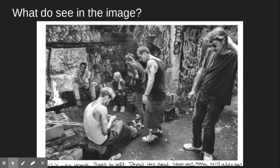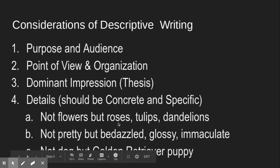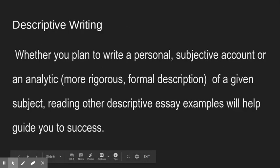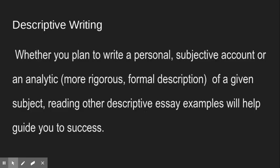For instance, in that photo description they didn't talk about it looking like a sunny day or water outside the window — nothing outside the building was described, only what was inside. With your details, be very concrete and specific. Don't say 'there were flowers' — say 'roses' or 'tulips' or 'dandelions.' Don't say 'that's a pretty purse' — say it's bedazzled or glossy. Don't say 'your room is pretty' — say your room is immaculate. Don't say 'they had a dog' — say it's a golden retriever or a golden retriever puppy. It creates a completely different image in your mind depending on what you say.